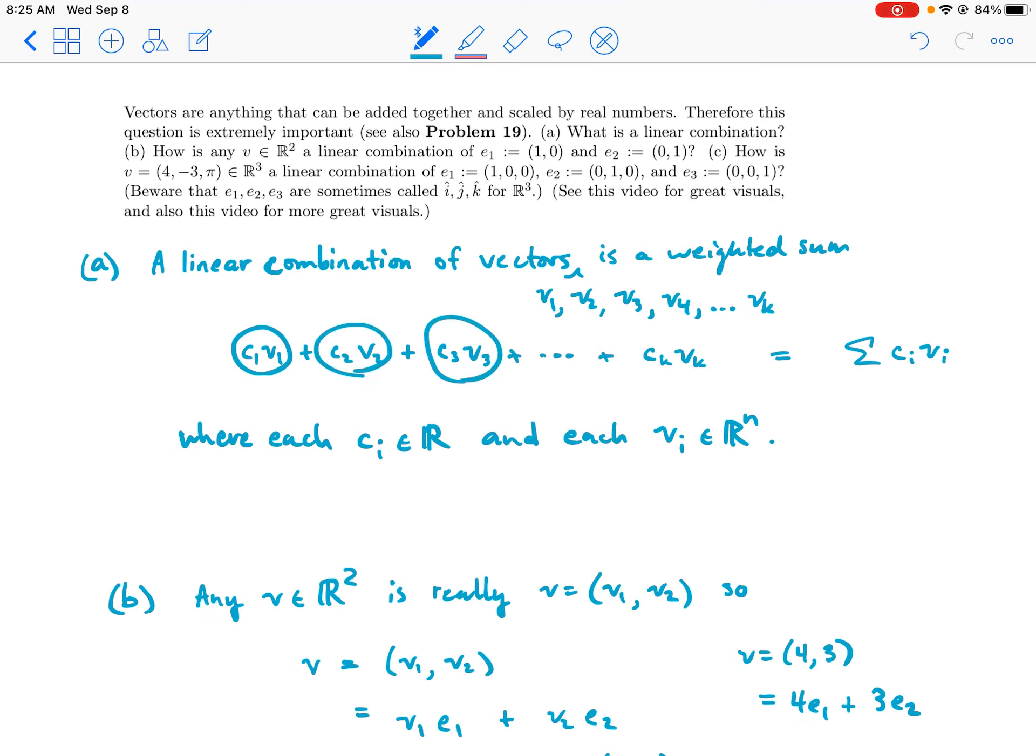One term, two term, three term, etc. How many terms? Well, in this case, there's k terms, which is now some value, like k could be 7. Okay.